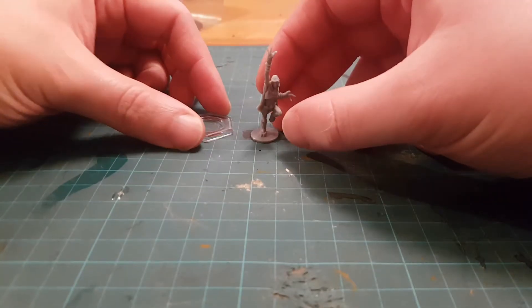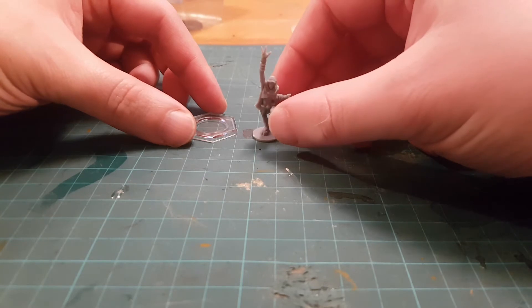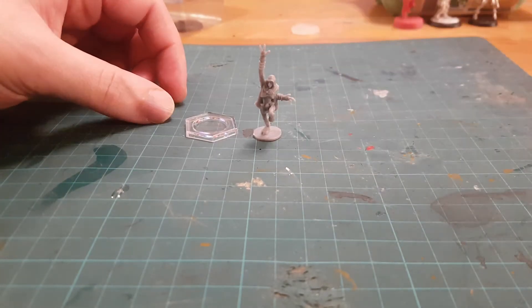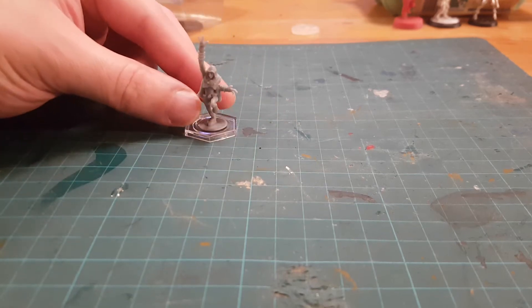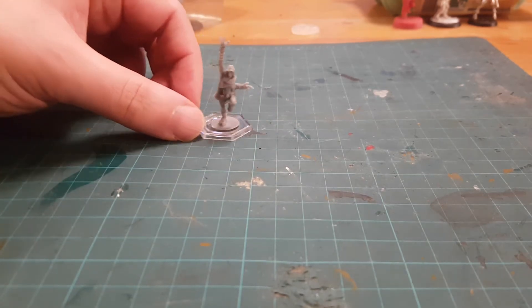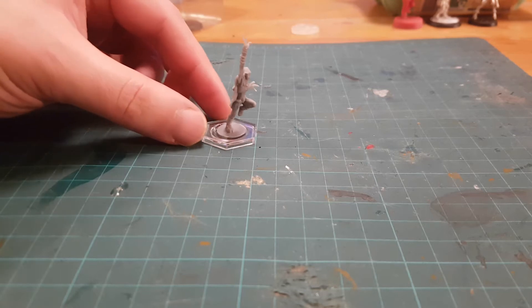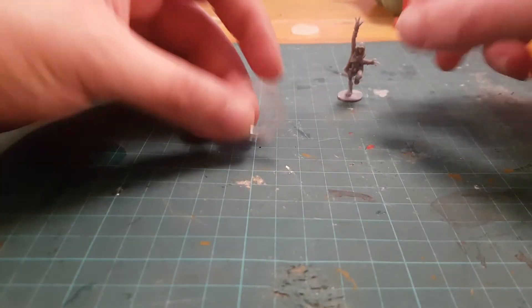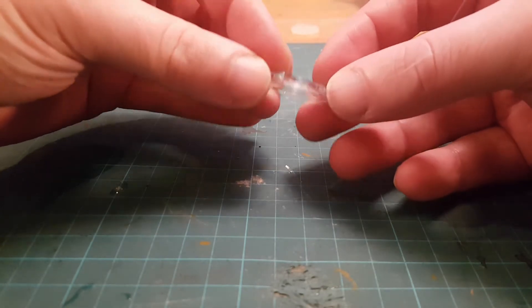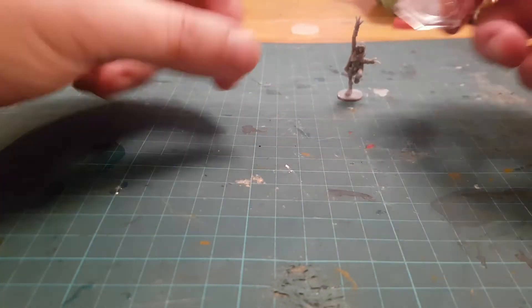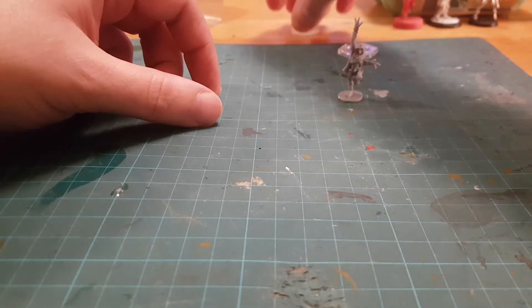So the first thing to do is to sort out a base and then get the model primed. The model comes with a small disc pudding base style attached to the foot so that you can glue that into the center of a hexagonal base that comes with the model. But as I'm not playing Dreadball and I'm using this model to be a bit more of a character model as I'll discuss later on, I really want to cut away that disc and glue it to a different base.